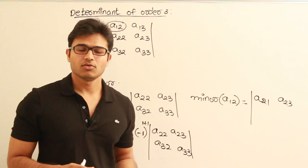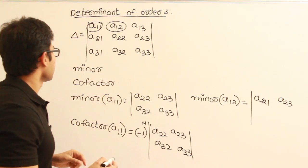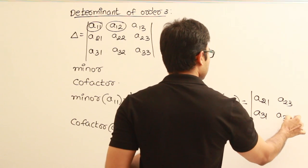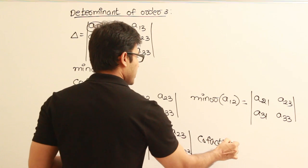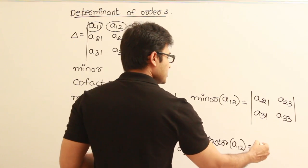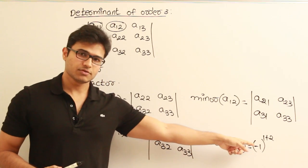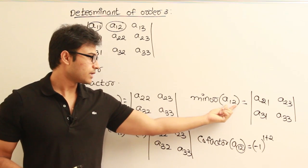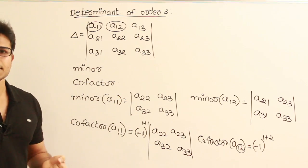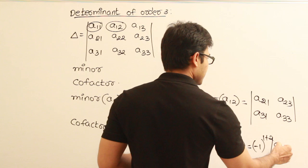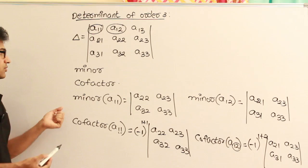The minor of a12 is found by removing its row and column, leaving elements a21, a23, a31, a33, and the determinant of those four is the minor. The cofactor of a12 is (−1)^(1+2) times the minor of a12, which negates the minor. So the minor and cofactor of a11 have the same sign, while the minor and cofactor of a12 have opposite signs.